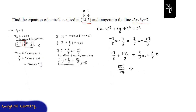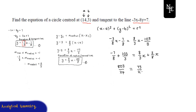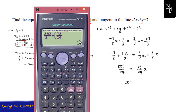So we have 73/24 x on the right-hand side. Dividing both sides by 73/24 gives us an x value of 11.